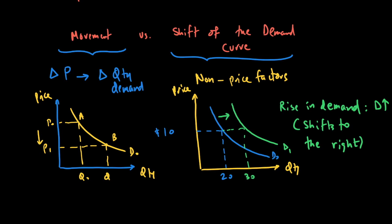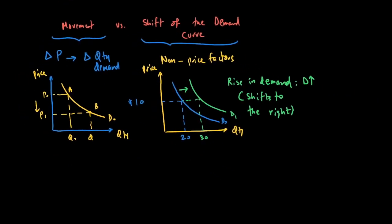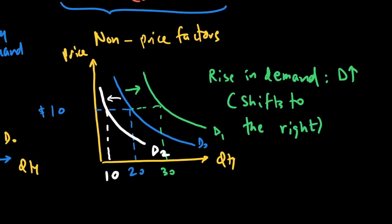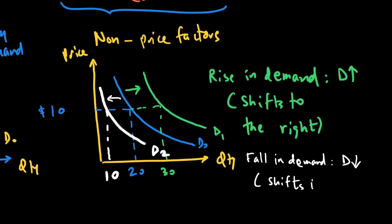If demand is going down, we go from D0 to D2. For the same price, if you want to buy only 10 instead of 20, your demand is falling — the demand curve is shifting to the left. Whenever the demand curve shifts right, consumers want to buy more at all price levels. Whenever it shifts left, consumers are buying less at all price levels.